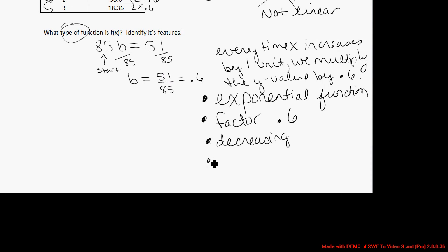The rate of decrease. Rate is found by taking the factor minus 1. So the rate is 0.6 minus 1, which is negative 0.4.